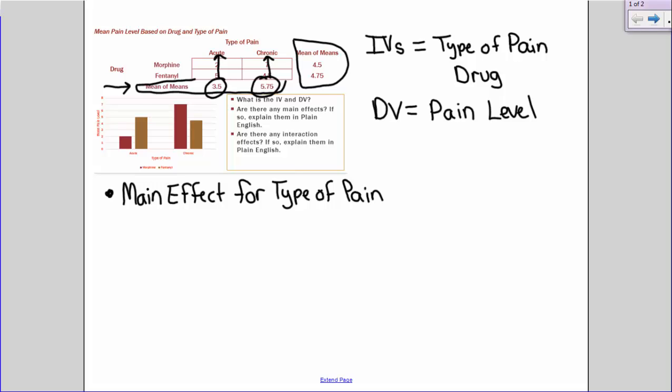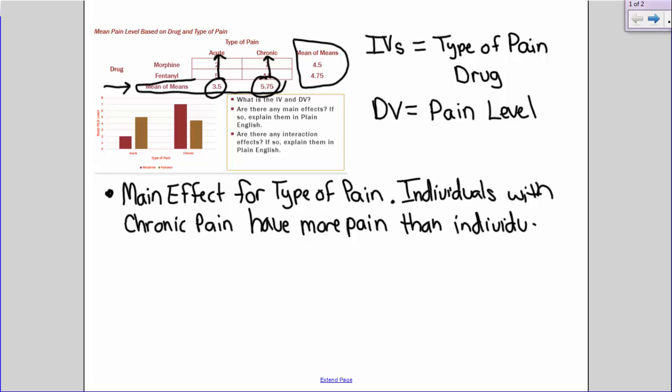Now, you need to explain that effect in plain English. Beyond just saying there is a main effect, that doesn't really tell me what kind of effect there is. So we could say that individuals with chronic pain have a higher pain level than individuals with acute pain, or you could say have more pain than individuals with acute pain.